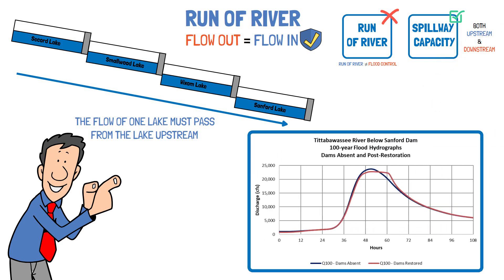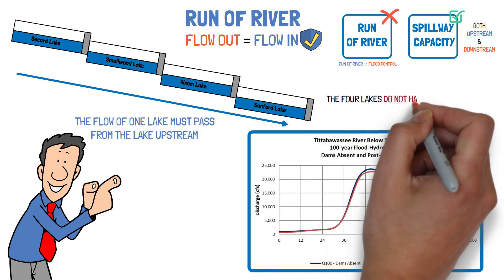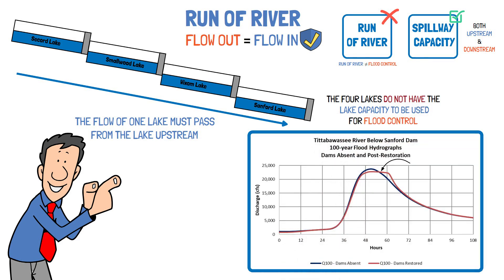As you can see in this graph, flow downstream of Sanford Dam is almost the same whether there is a dam or not. The flow is slightly delayed at its peak as the auxiliary spillway is engaged. The four lakes do not have the lake capacity to be used for flood control.